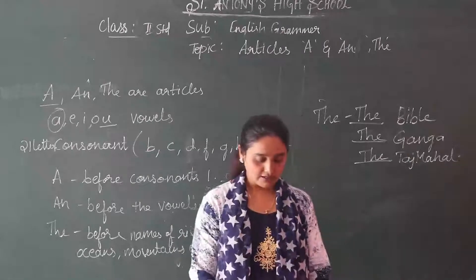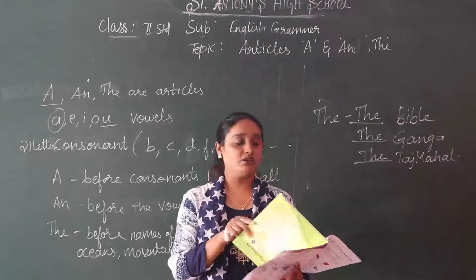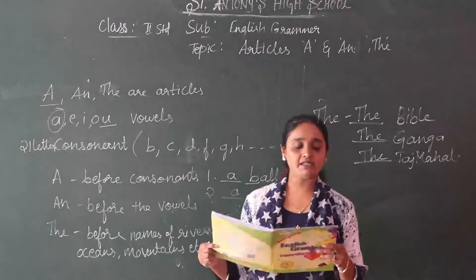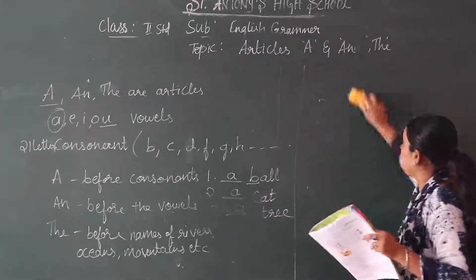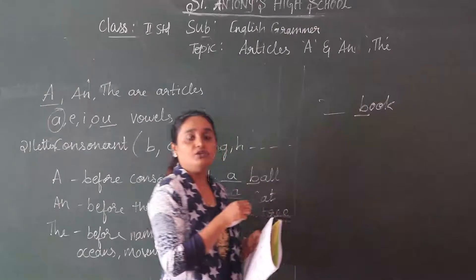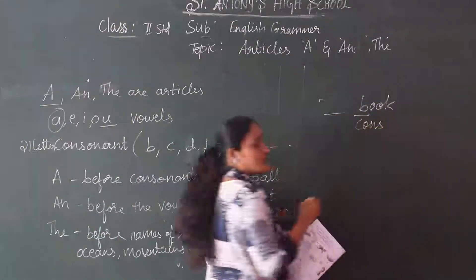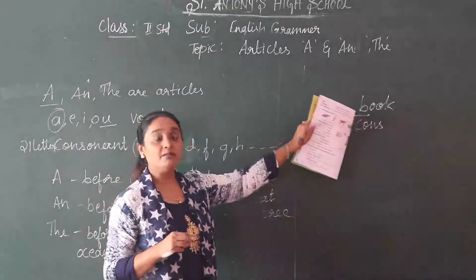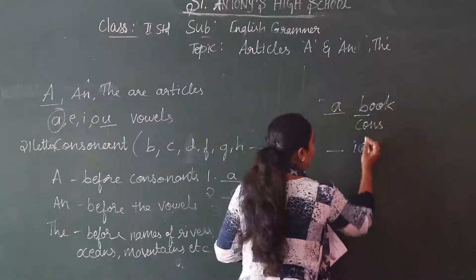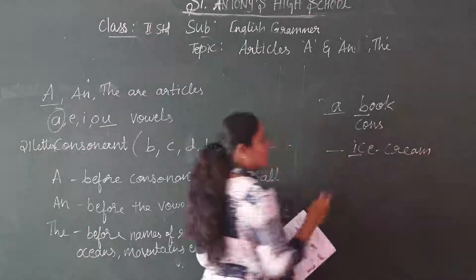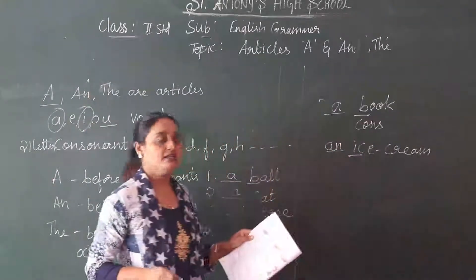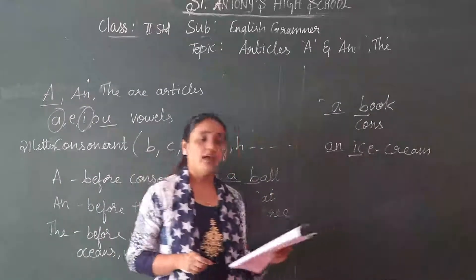Now let's move on to the textbook — page number 8. You have exercises, children. Fill in the blanks. You have to use A and AN. First one — dash book. What is B here? B is a consonant. Before the consonant what you have to use? A. Next one — dash ice cream. I is a vowel. So before the vowel you have to use AN — an ice cream.